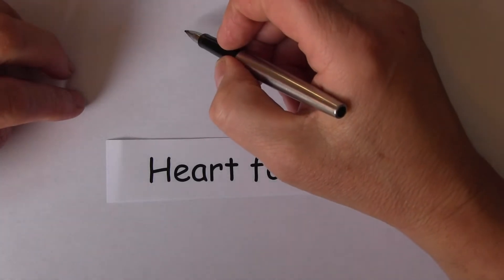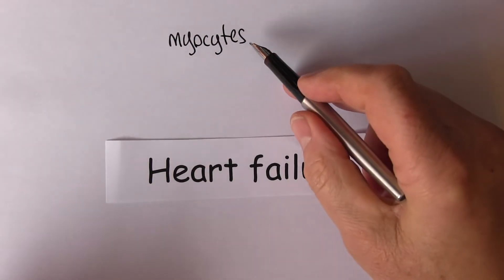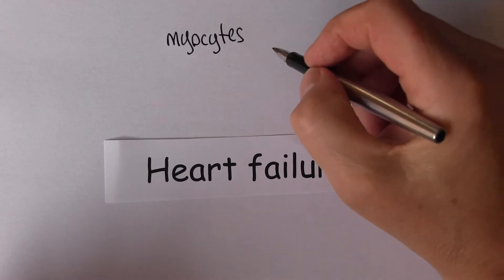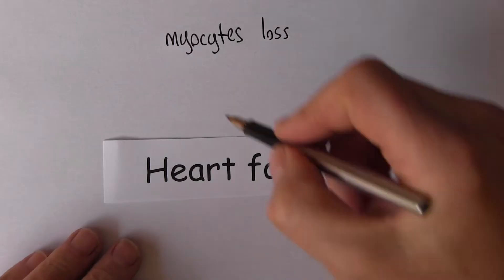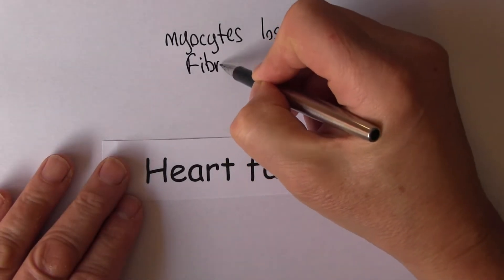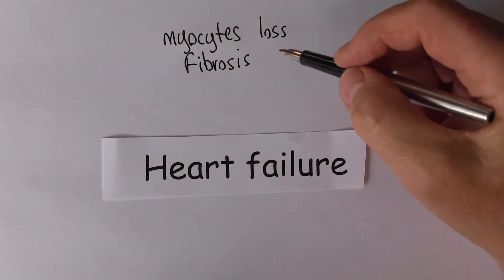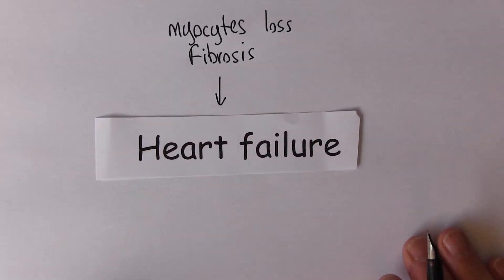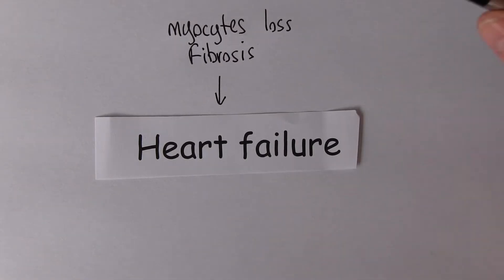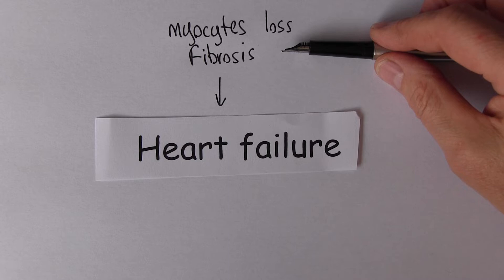There's going to be death of the myocytes — the contractile muscle cells in the myocardium. There's going to be myocyte loss, and we know there's going to be fibrosis in the myocardium, particularly in the ventricular myocardium, and it's this that's going to lead to heart failure. So impaired ventricular function is the primary pathology, the primary abnormality in heart failure, unless the heart failure is caused by valve disease.